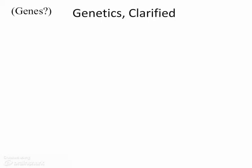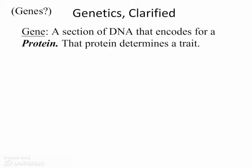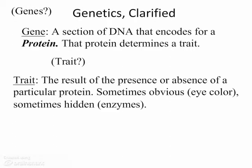I've spoken enough about genes without defining them yet. You probably remember from reproduction and development that a gene is a section of DNA that encodes for a particular protein, and that protein determines a particular trait. A trait is the result of the presence or absence of a particular protein. Sometimes we can see it — like the color of eyes or the color of pea pods, which we'll get to later.